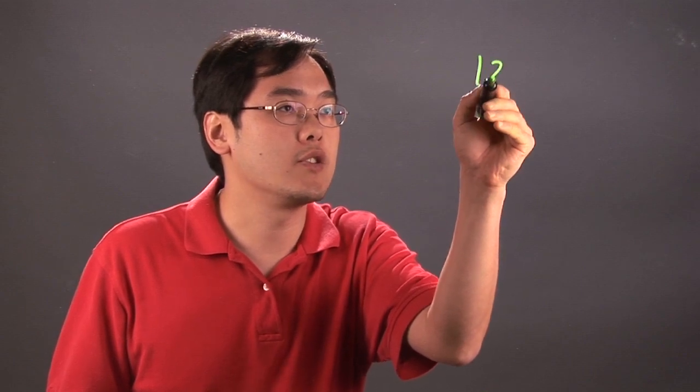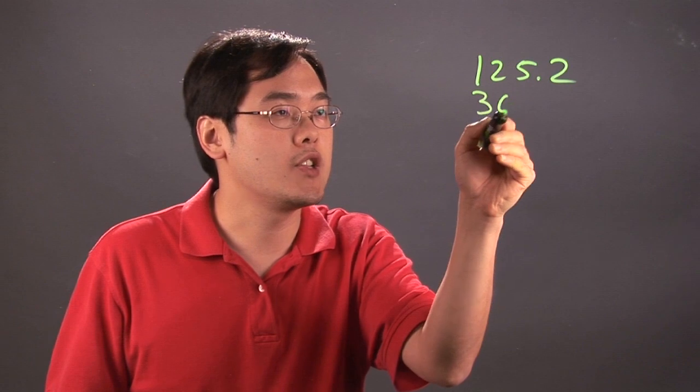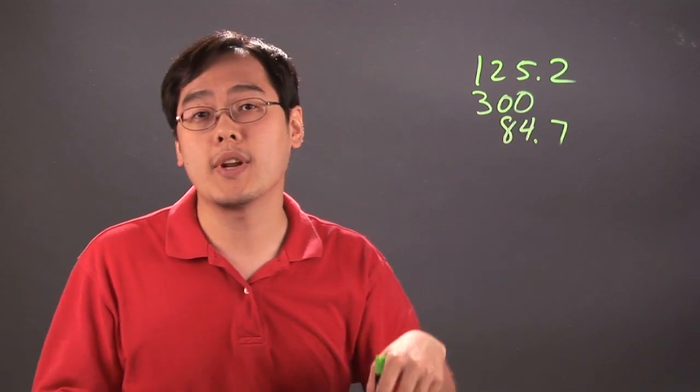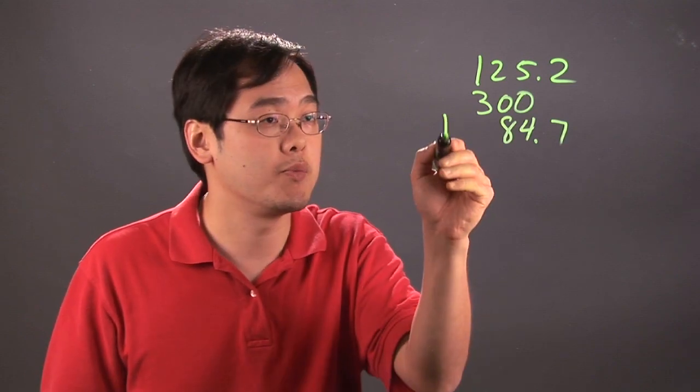So for example, if you have a destination that took 125.2 miles, another destination that took you 300 miles and another one that took 84.7 miles and you want to calculate the mileage to all these different places, all you're really doing is you're adding all those miles together.